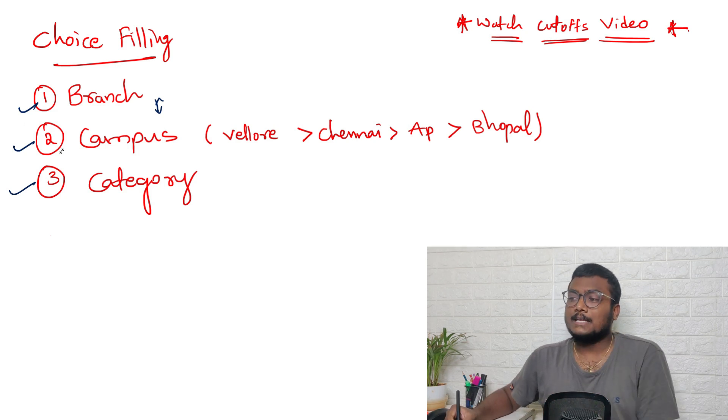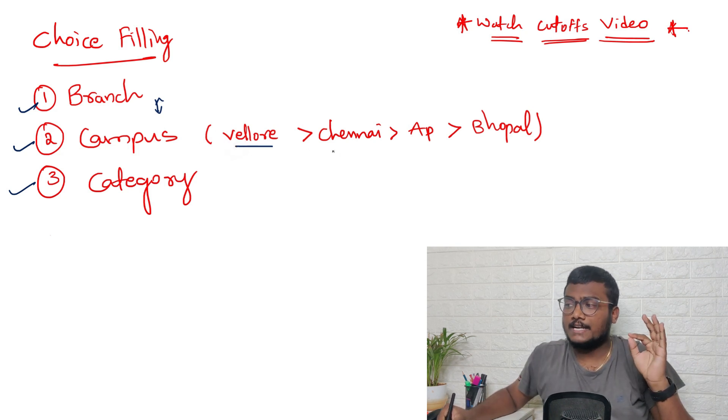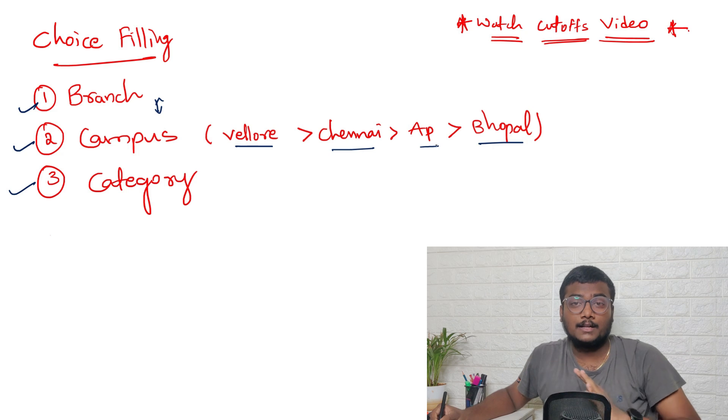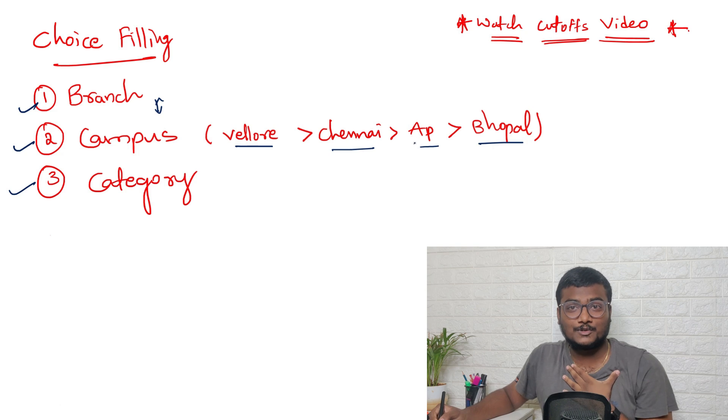Coming to campus, you can surely prefer Vellore over Chennai, or AP, and then Bhopal. Bhopal will be my last preference. This is my order. This is person to person - another person can give you a different order. Whoever wants to follow me, it's up to you. This is what I suggest.